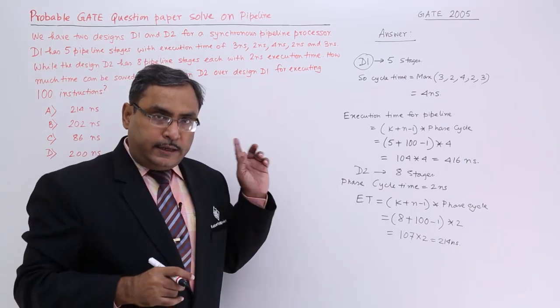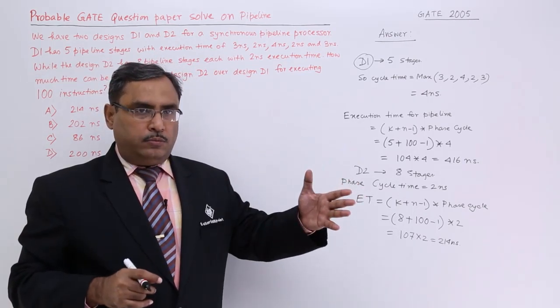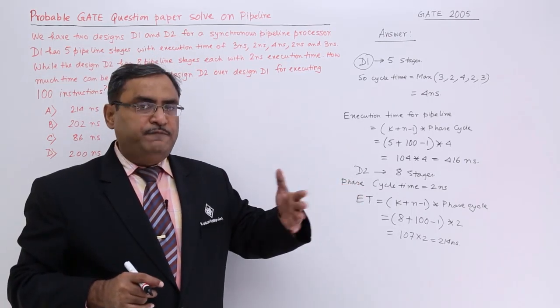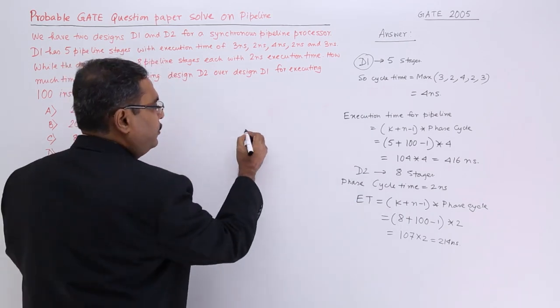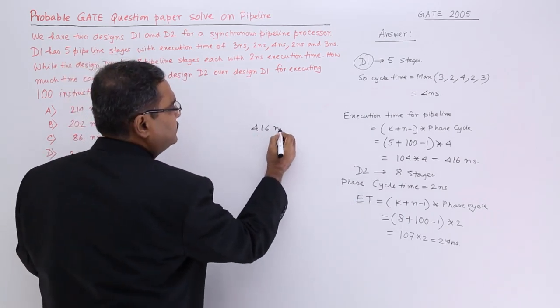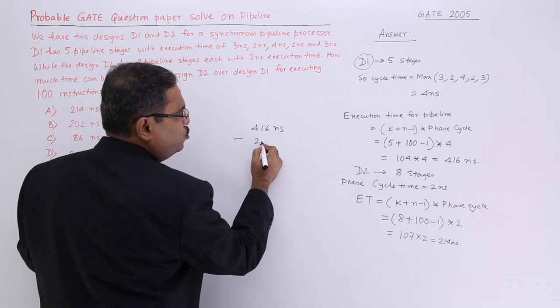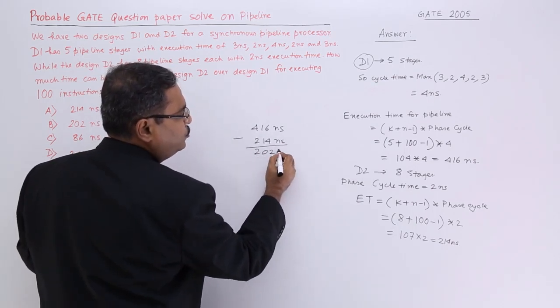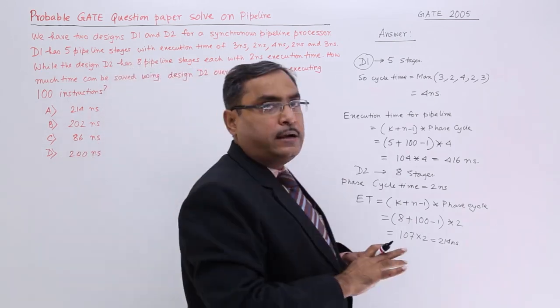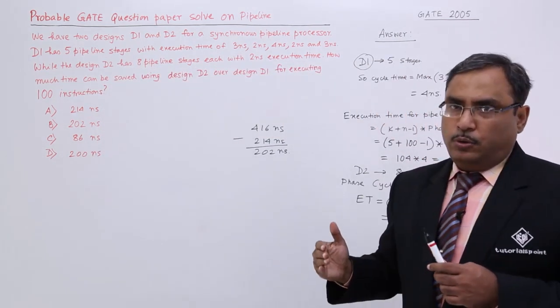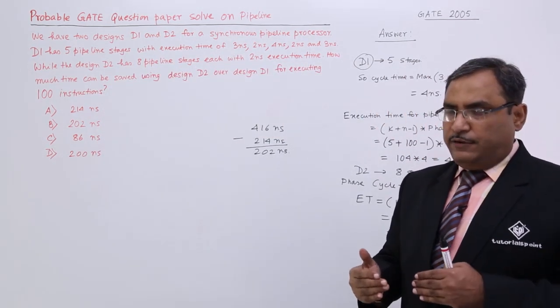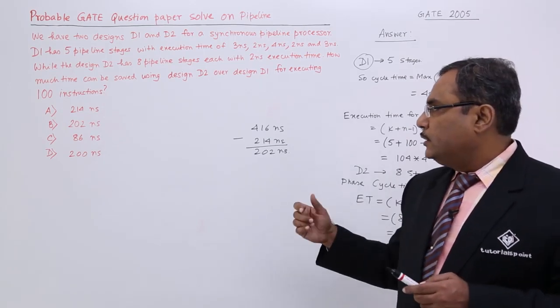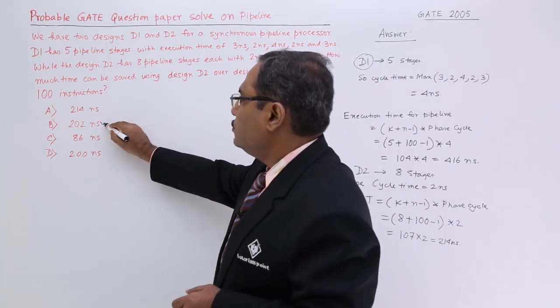Now they are asking what is the betterment? What is the difference value? In that case I shall go for 416 nanosecond minus 214 nanosecond. The answer will be 202 nanosecond. That is the betterment. This time will be required less if we consider the D2 pipeline. 202 is this one. B will be the answer.